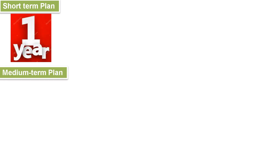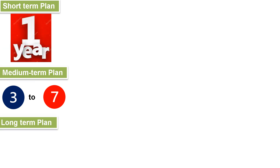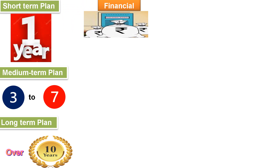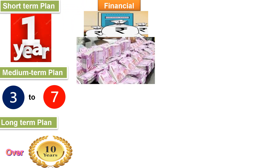Short term, medium term, and long term plans. Short term plan is a one-year plan, like every annual budget. Medium term plan is 3 to 7 years, typically a 5-year plan. All five-year plans are under the medium term plan. Long term plan is over 10 years, such as a 15-year perspective plan.